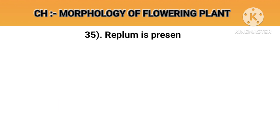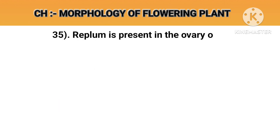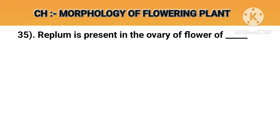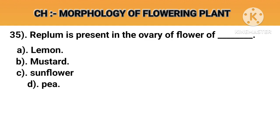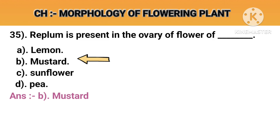Question number 35. Replum is present in the ovary of flowers of. Option A: Lemon. Option B: Mustard. Option C: Sunflower. Option D: P. Answer B: Mustard.